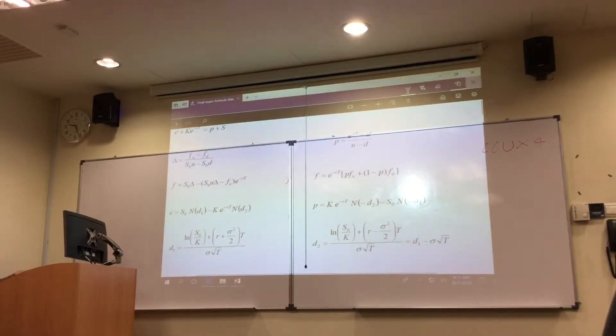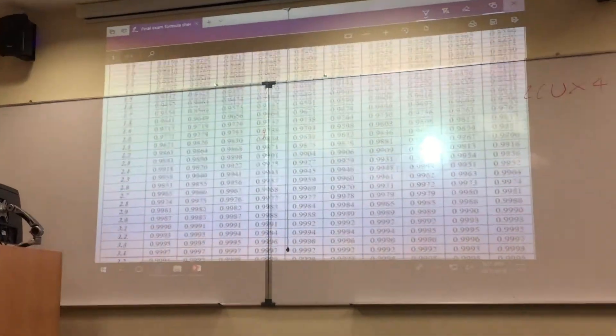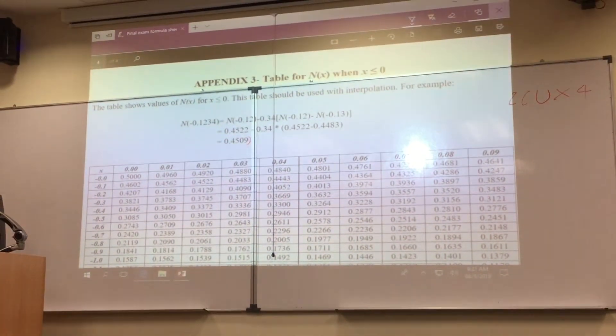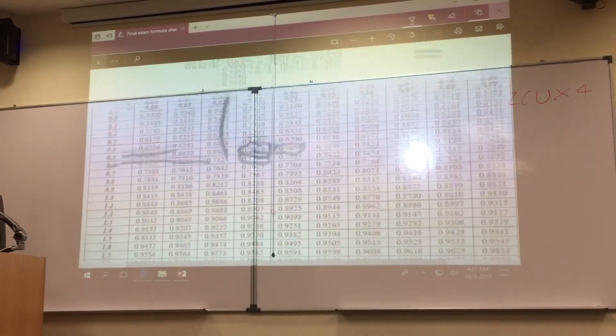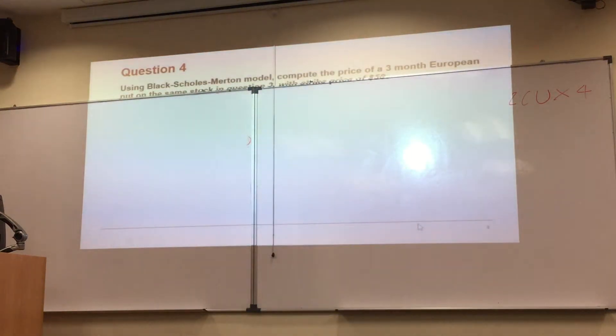There's two ways. You can put the value D1 and D2 here and then go to the negative table and follow the similar approach. But the thing is, you already know N of D1 and N of D2. Now if you want to calculate N of negative D1 and N of negative D2, you just simply take 1 minus N of D1.